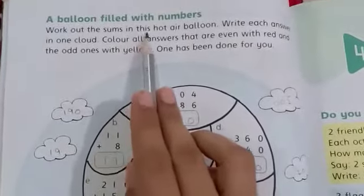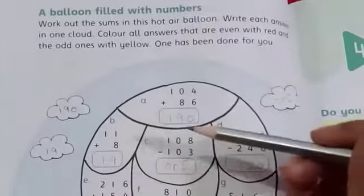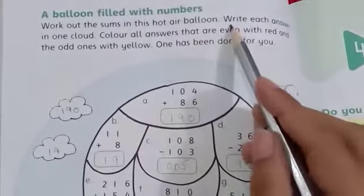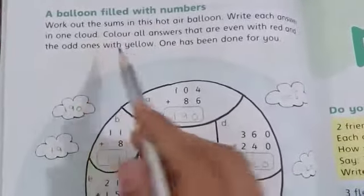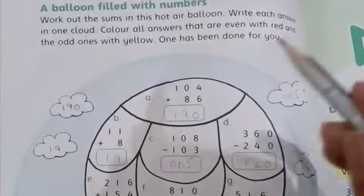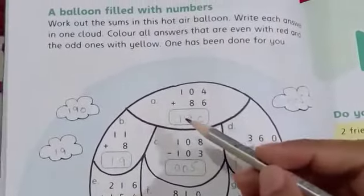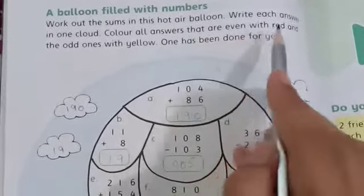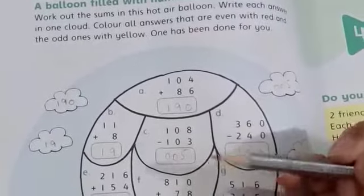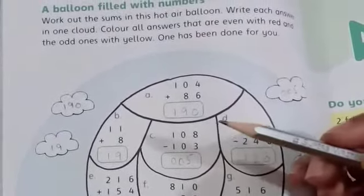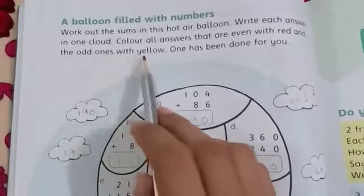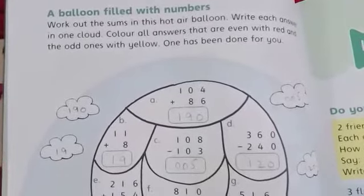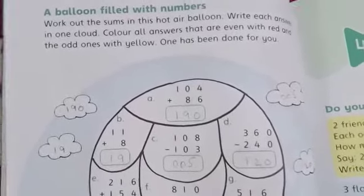Work out the sums in this hot air balloon. You have questions inside the balloon. Write each answer in one cloud. The clouds are on the sides of the balloon. Color all answers that are even with red, and the odd ones with yellow. One has been done for you.